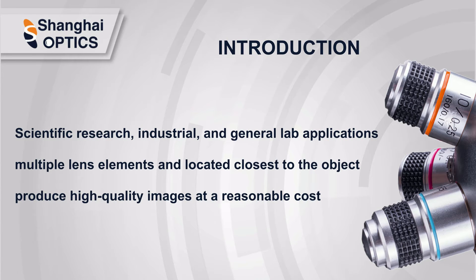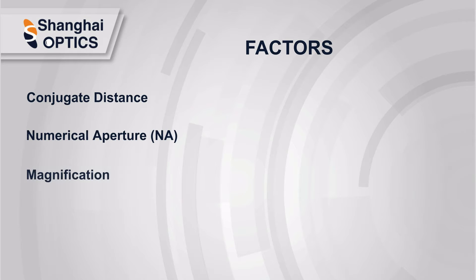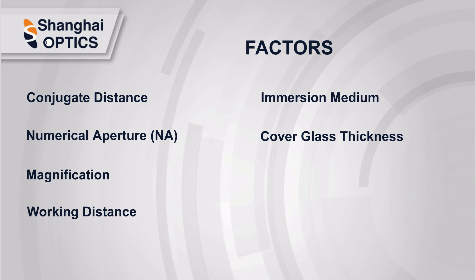A microscope objective is typically composed of multiple lens elements and located closest to the object. There are many types of microscope objectives available. When choosing a microscope objective, we will need to consider a number of factors including conjugate distance, numerical aperture, magnification, working distance, immersion medium, cover glass thickness, and optical aberration corrections.